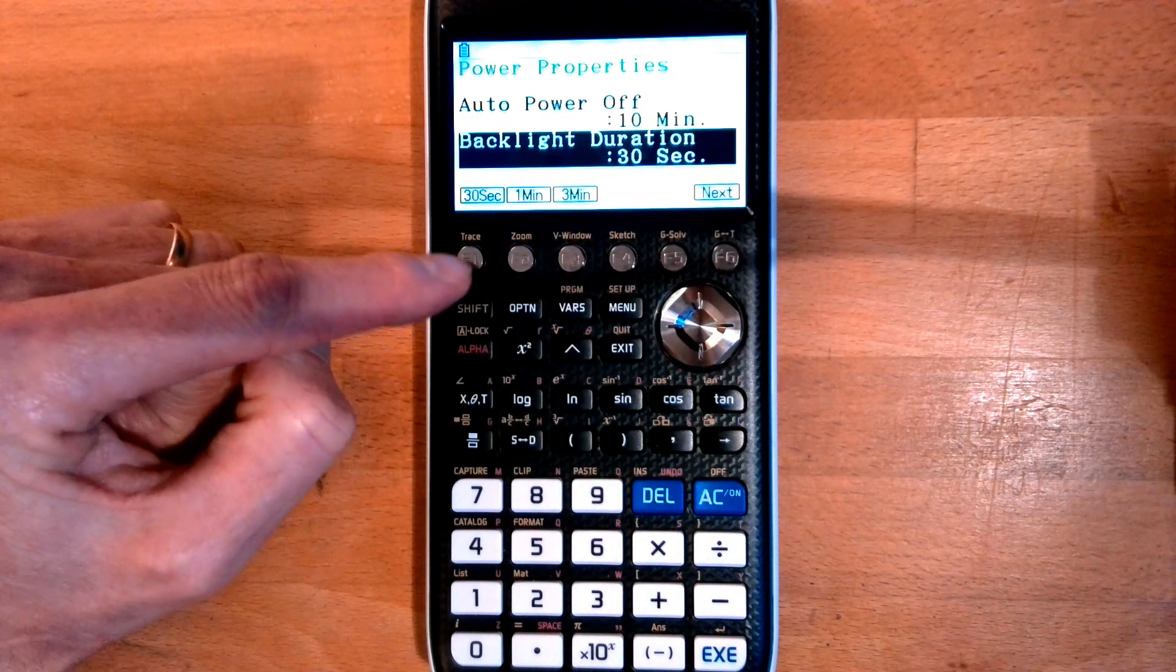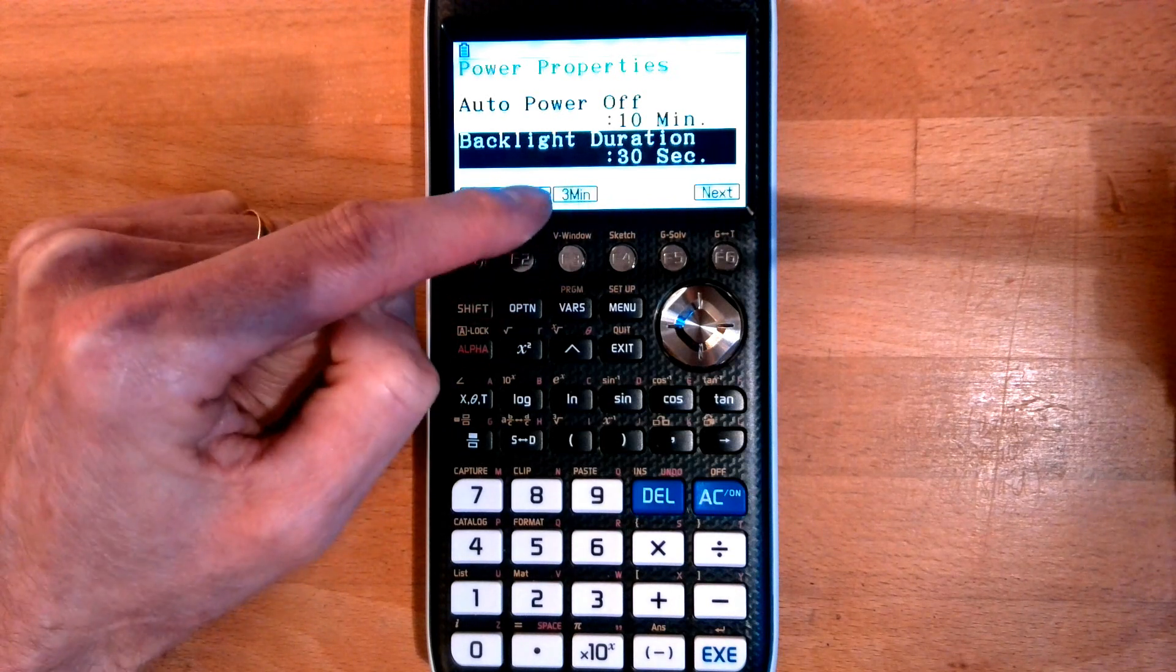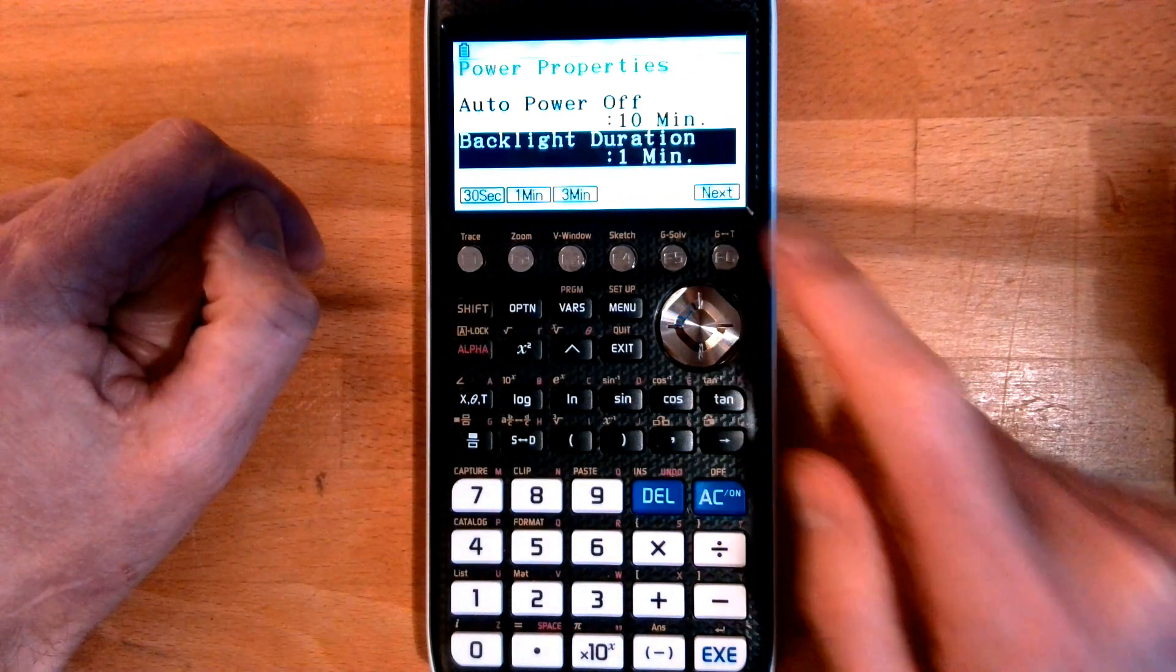Can you see these function keys here? You'll get used to using these with those options. So I want one minute. It's not a touch sensitive screen, so I'm just pressing the function key underneath one minute, and then next.